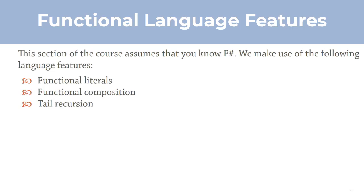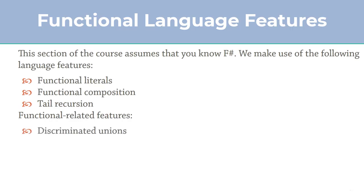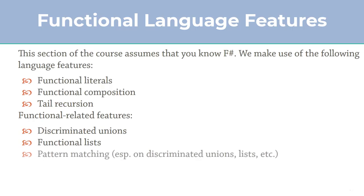F# also has features which exist to support the functional programming paradigm specifically. Those features include discriminated unions, functional lists, and even with ordinary lists the syntax for creating them is more flexible than in C#. Once you have lists or discriminated unions, you can do wonderful pattern matching, including advanced stuff like partial patterns. This is what we're going to see in this section - we'll leverage these features to implement some Gang of Four patterns you already know about.